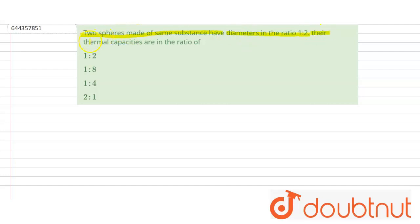So the thermal capacity is defined as heat divided by change in temperature. And heat is, we can write m·s·ΔT divided by ΔT, so it will be m·s.